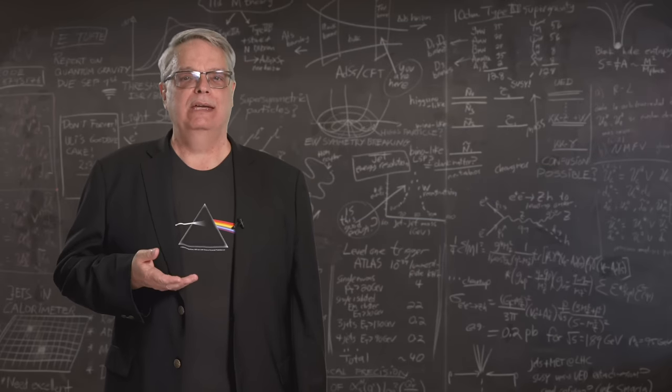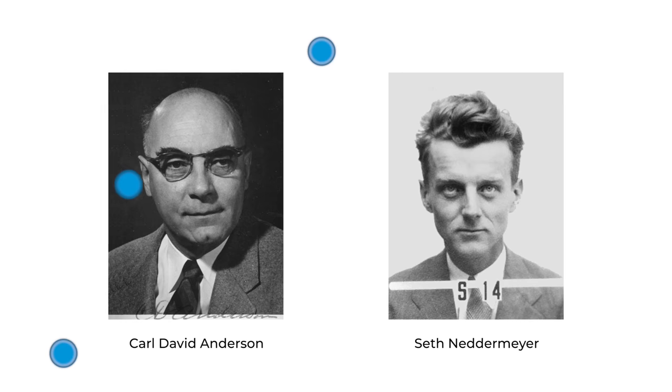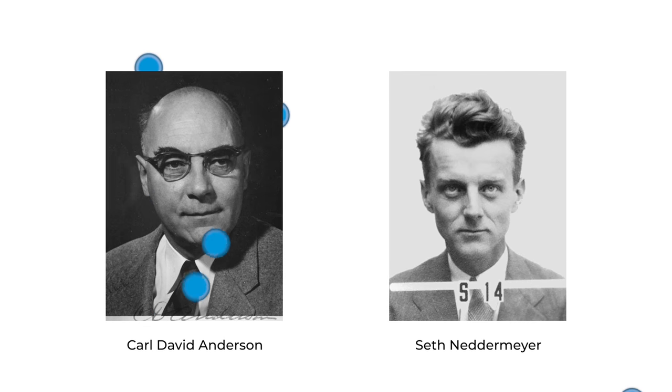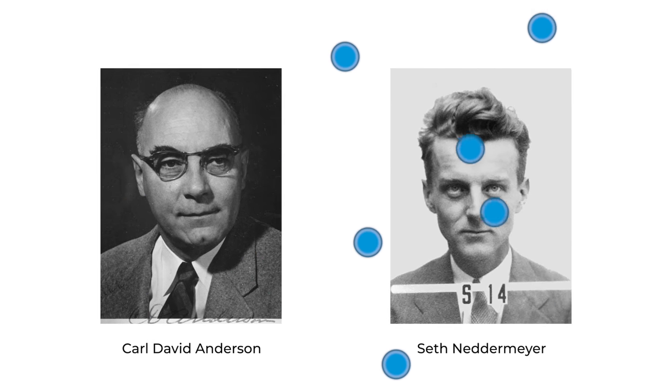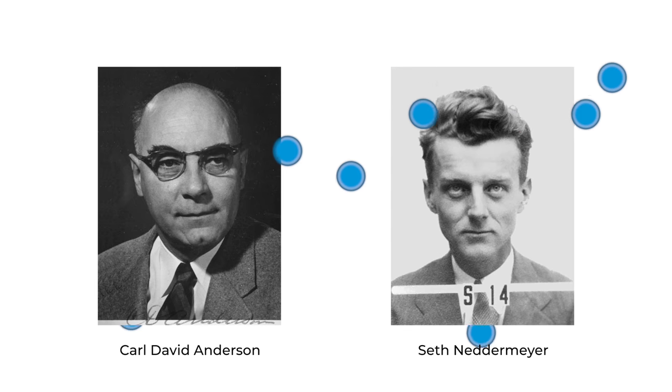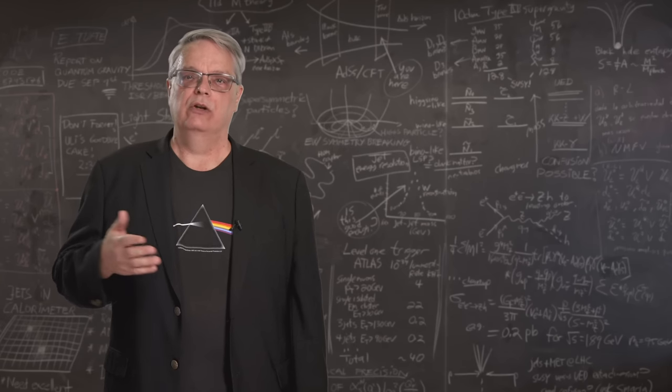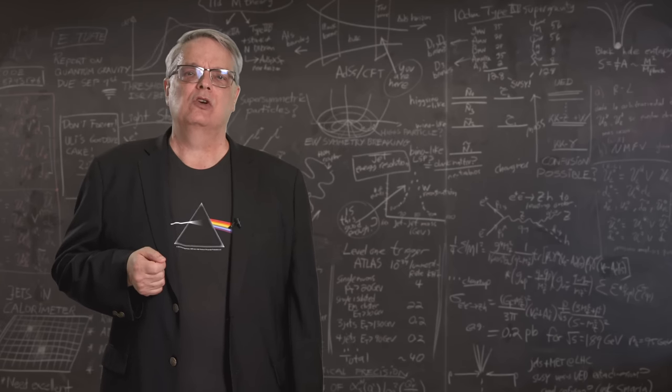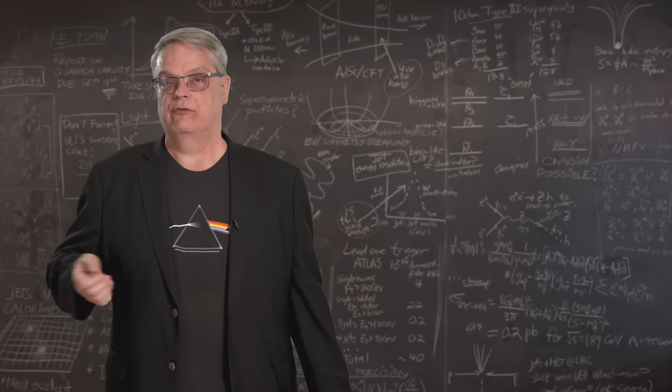Now, how those muons are made is the topic for another video, but back in 1936, physicist Carl Anderson and his graduate student Seth Neddermeyer discovered that muons created in the upper atmosphere rain down on the Earth's surface. These muons have a range of energies from very low to very high. We can't determine the energy of individual muons, but we can determine the spectrum of different energies.